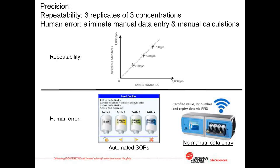The validation of analyzers for quantitation of impurities includes an investigation of precision. ICH Q2 recommends that precision of repeatability be validated using three replicates each of three certified standards at different concentrations. It also recommends that steps are taken to reduce the opportunities for human error to impact on optimal intermediate precision, such as automation of standard operating procedures and elimination of manual data entry and manual calculations.